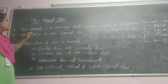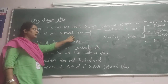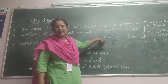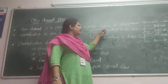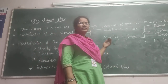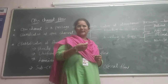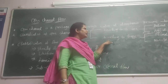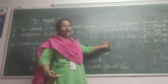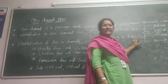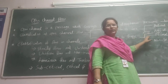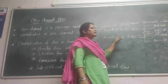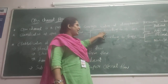Open Channel Flow is classified into two types: according to the cross section formed, and according to the shape which is formed. According to the cross section, it is divided into two types — one is Natural Channel and the other one is Artificial Channel. According to the shape of the channel, it is again divided into two types — one is Prismatic Channel and the other one is Non-Prismatic Channel.